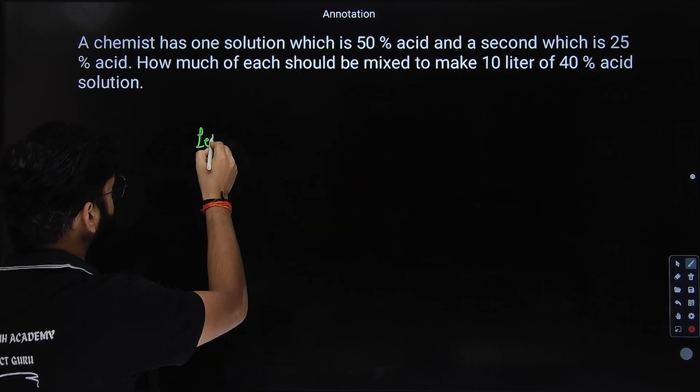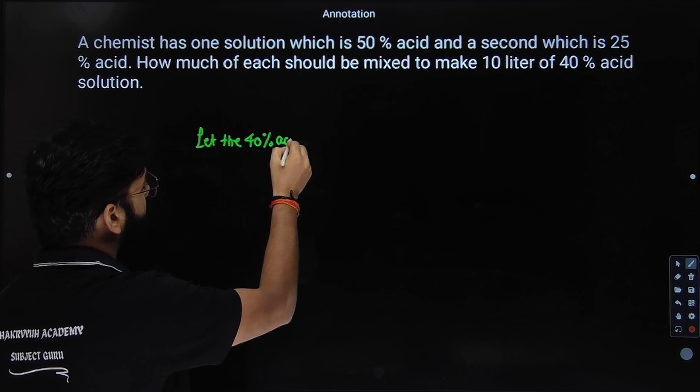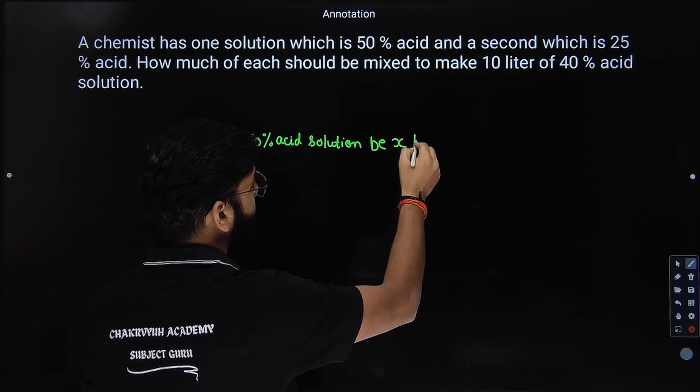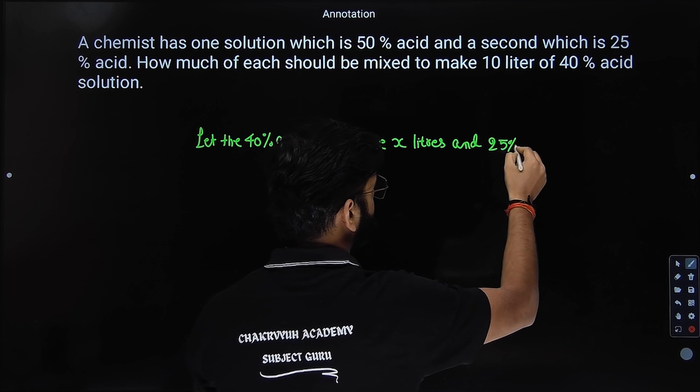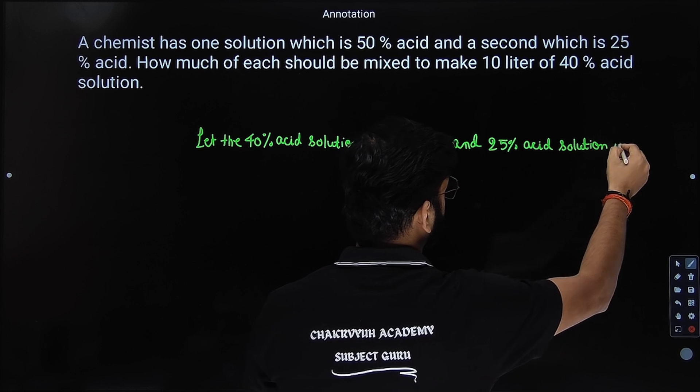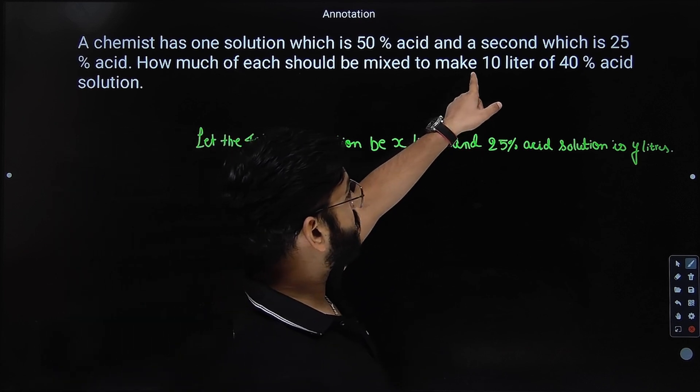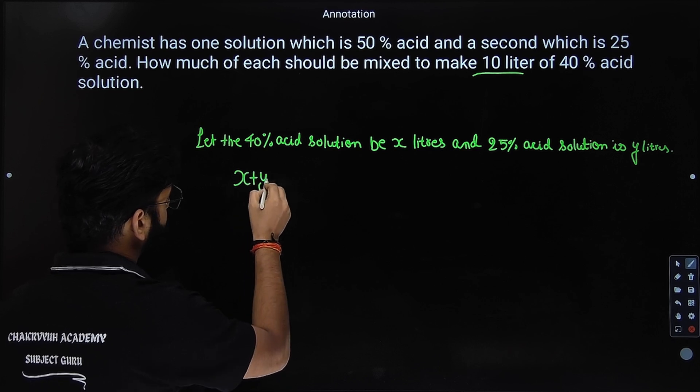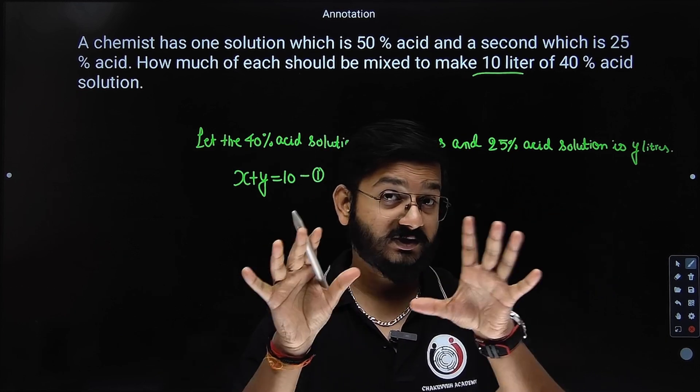Let us assume that. So we can say that let the 50% acid solution be x liters and 25% acid solution is y liters. This is the assumption. So what is the total volume? 10. So x plus y should be 10. First equation. This is the first equation, x plus y equal to 10. Now, second equation you can write down by their concentration, percentage concentration.